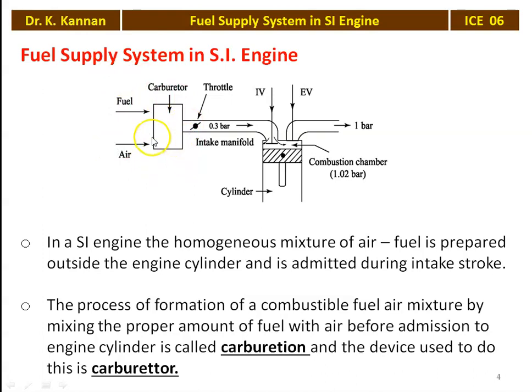The device used for this is called a carburetor. The carburetor performs the operation called carburetion — which is mixing air and fuel. The correct quantity of air and fuel based on the engine requirement must be provided. The engine requires different proportions — different air fuel mixtures — and preparing the air fuel mixture according to the engine requirement is the duty of the carburetor. Carburetion is the process of mixing air and fuel to be admitted into the engine cylinder, and the carburetor is the device used for this purpose.